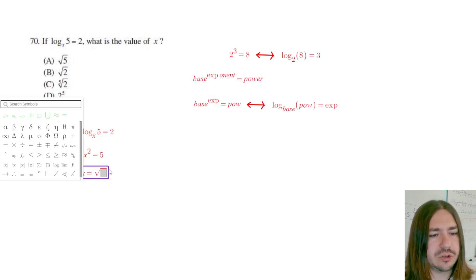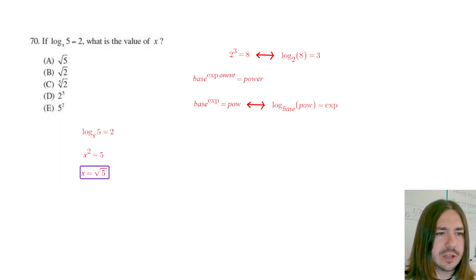Now, algebraically, you should get plus or minus 5 here, but the base of a logarithm cannot be negative, so we're going to just disregard the negative solution to this equation. It'll be extraneous.